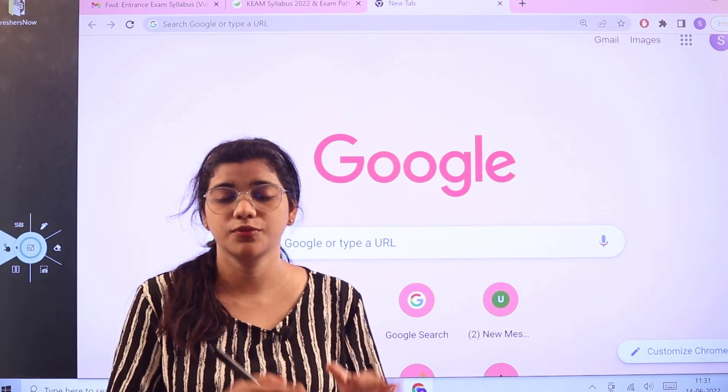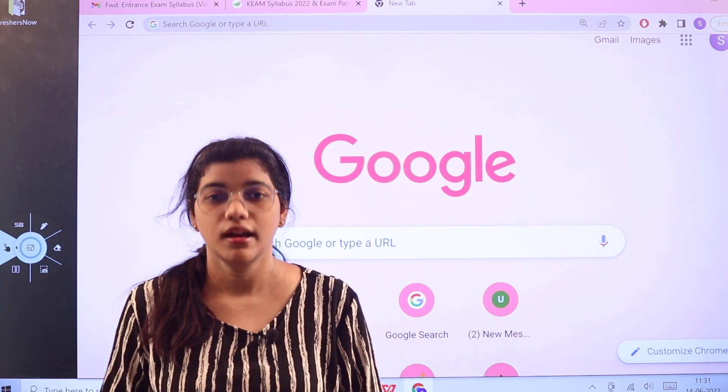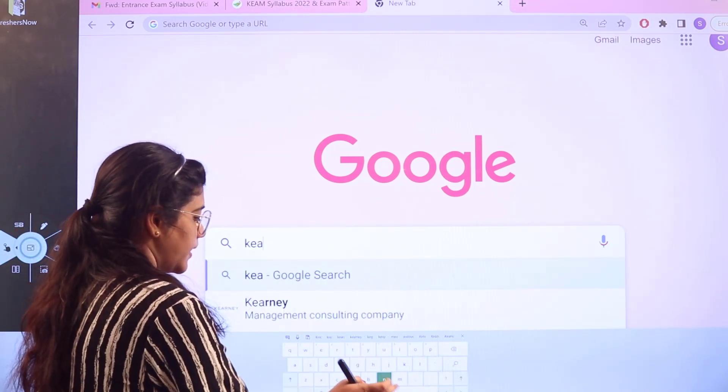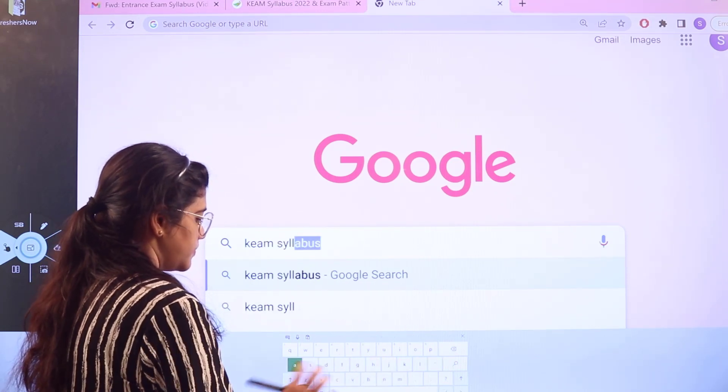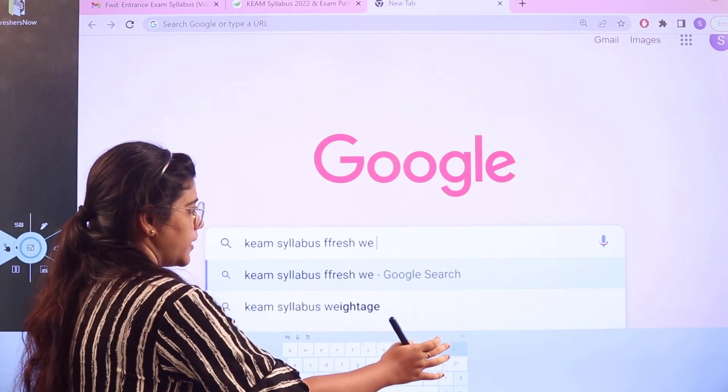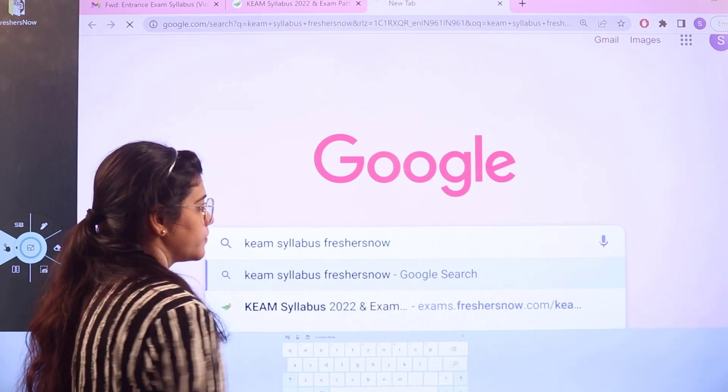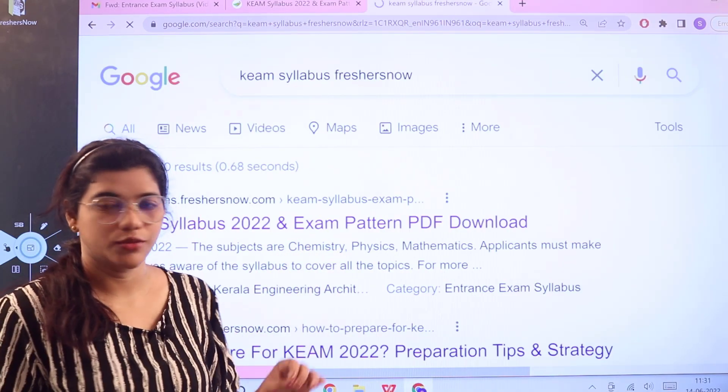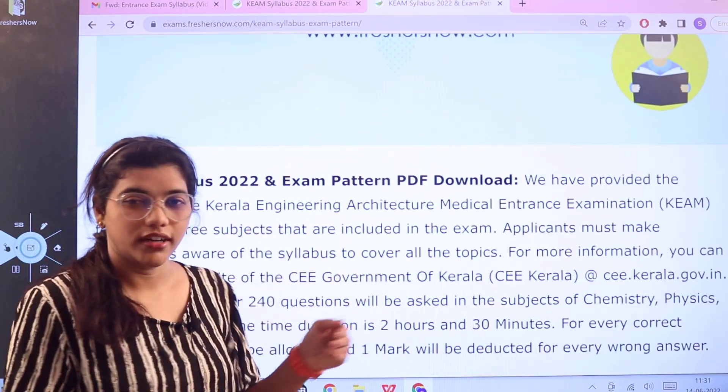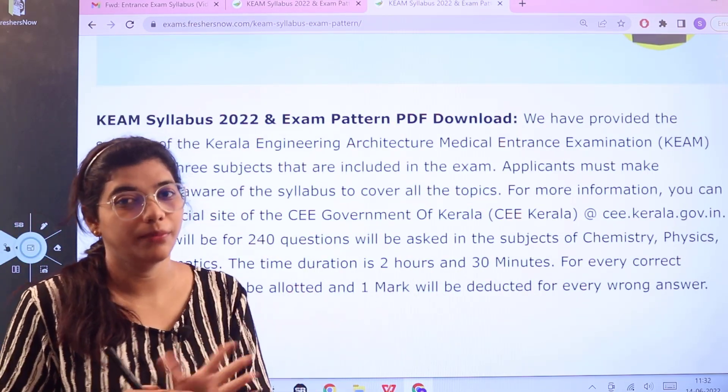So with this note, I would first like to begin by accessing this information from exams.freshersnow.com. All you have to do is head over to Google and search for KEAM syllabus Freshers Now. So as you search, you can see the first link itself is from exams.freshersnow.com. Give a click on this and this particular page will be opening up for you, starting off with a basic introduction about what the examination is, and we will be heading over to the examination briefs.